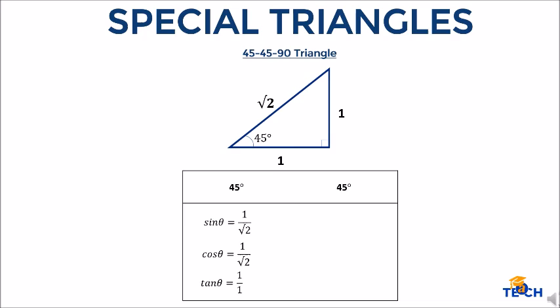For the reciprocal functions, cosecant theta is square root of 2 over 1. Secant theta is also square root of 2 over 1. And cotangent theta is 1 over 1, or simply 1. That covers the 45-45-90 triangle.